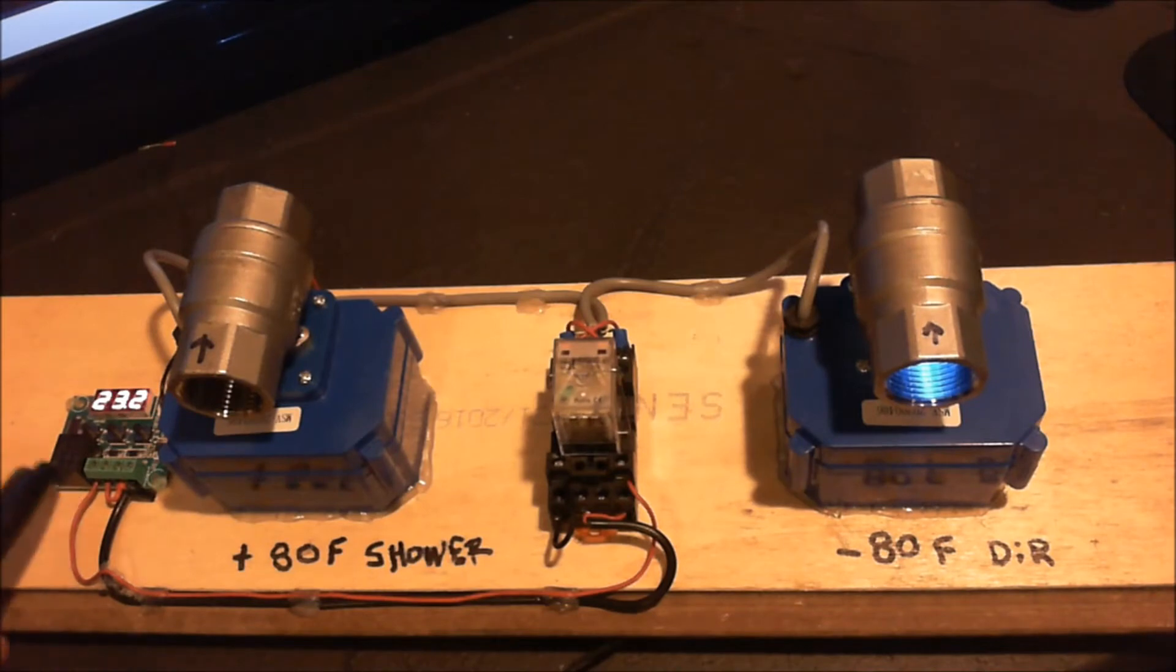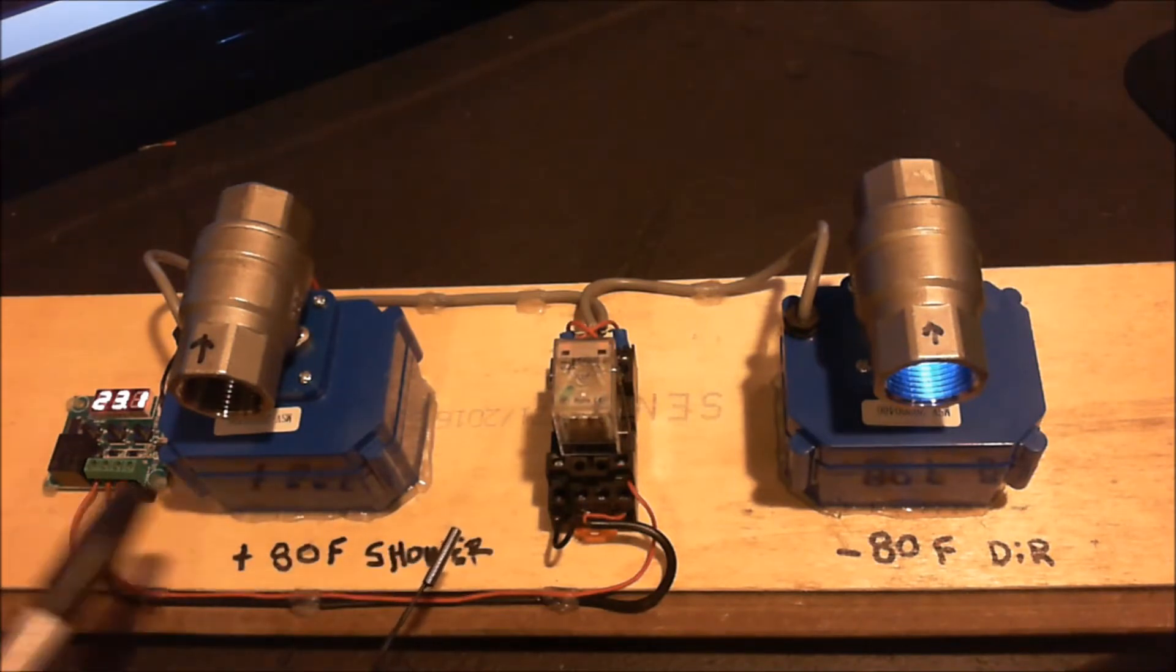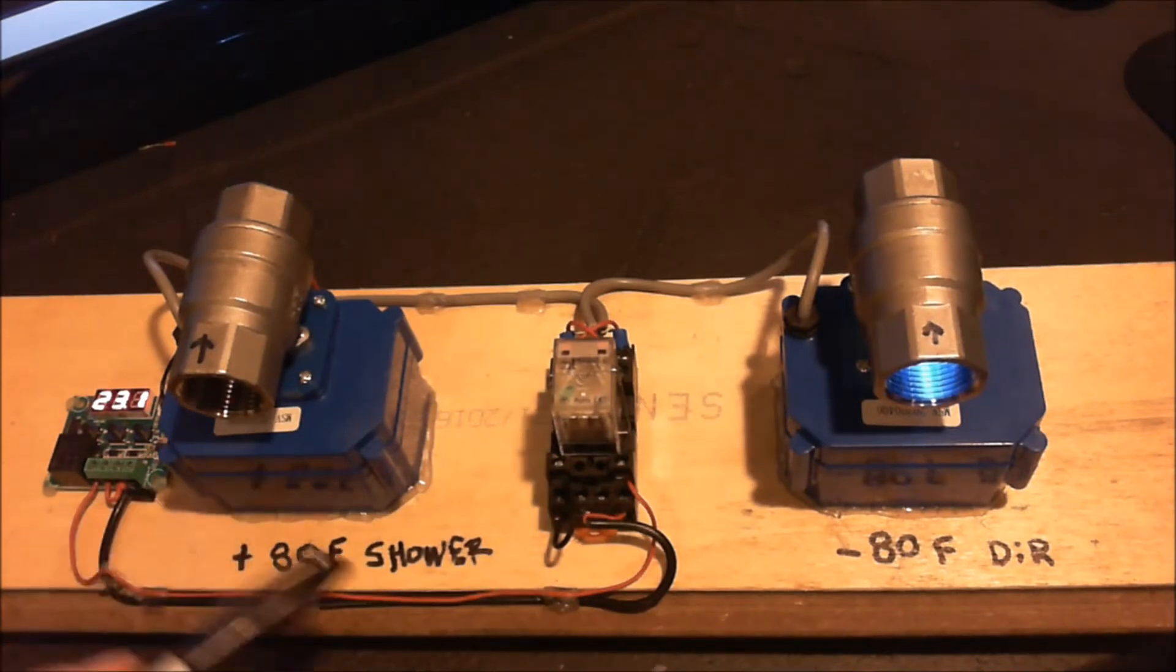This assembly has a thermostat which has a thermistor attached to it. This thermistor will detect the temperature of the pool water and determine which valve opens and which valve closes.